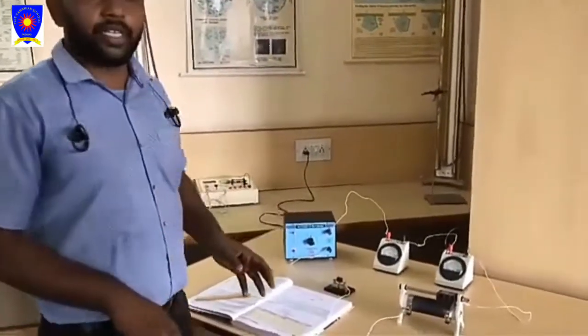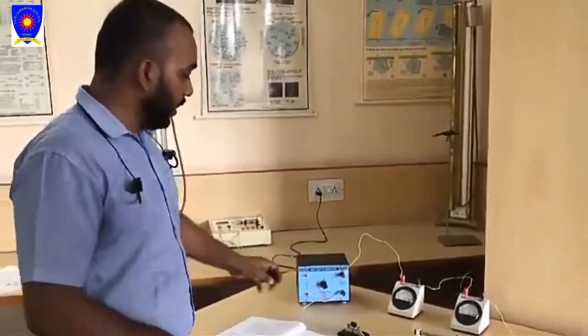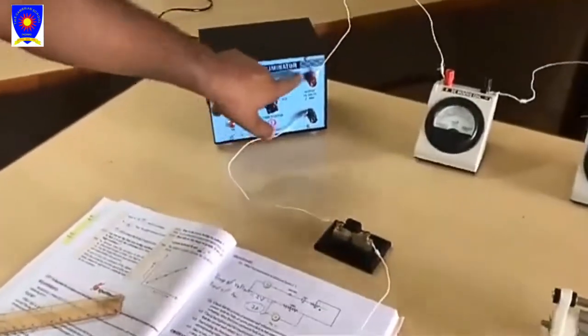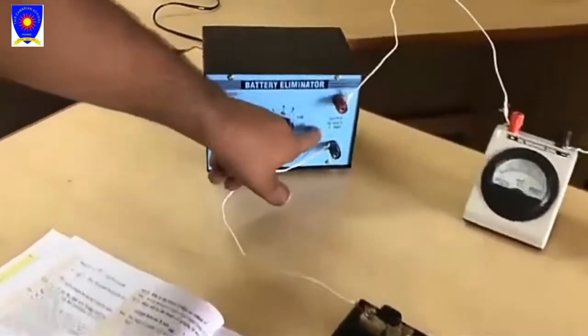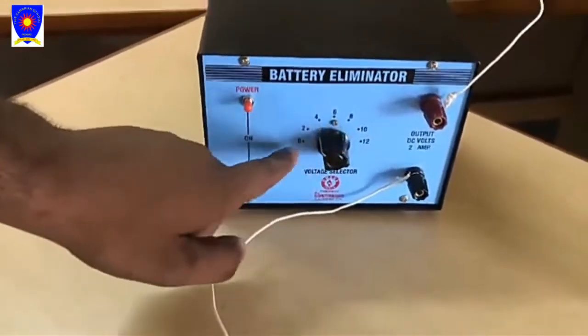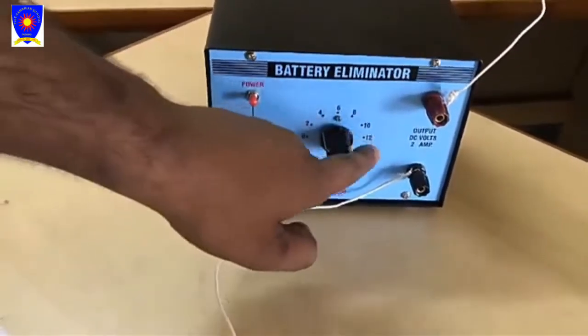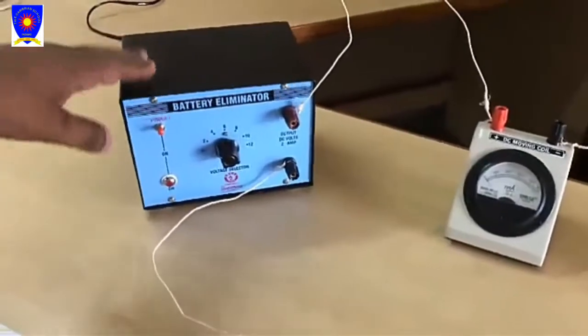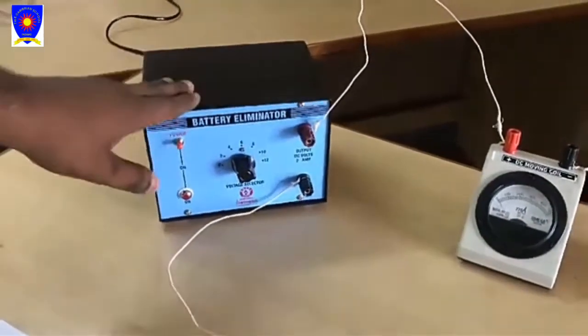Now we perform this practical which is Ohm's law. We have learned that voltage is directly proportional to current and V equals IR. Now we have to learn about the apparatus required for this practical. Firstly, we are looking at the battery eliminator - its output DC voltage is 2 ampere and its voltage can be increased or decreased from 0, 2, 4 to 12 volt.